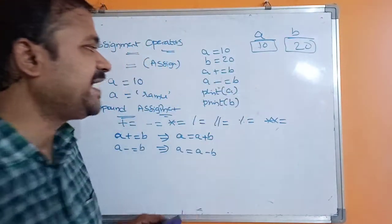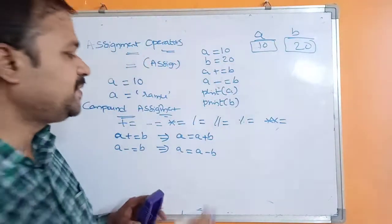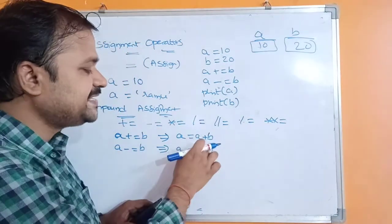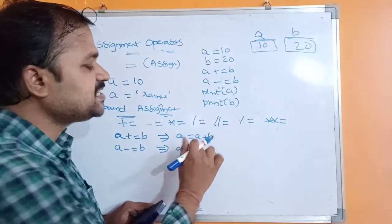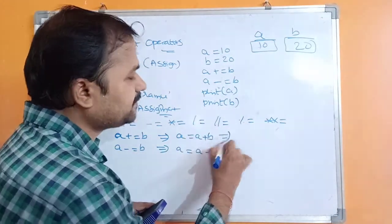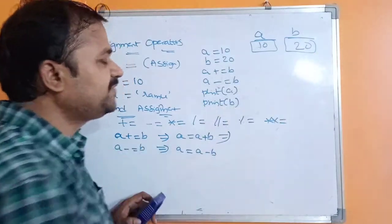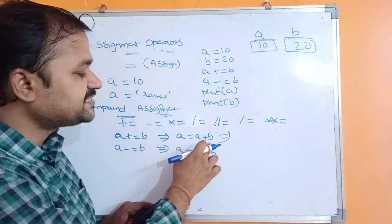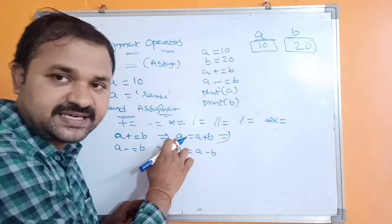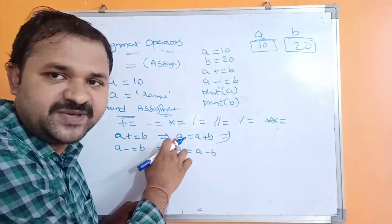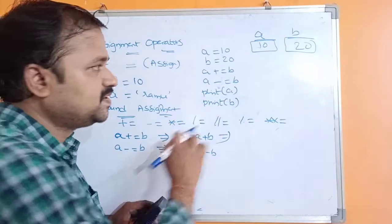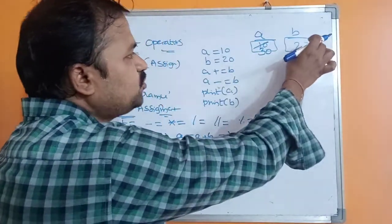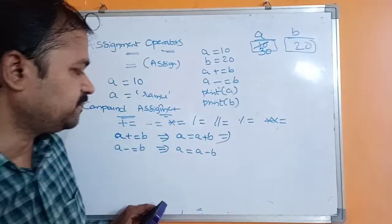Let's see the output. Initially, a is 10 and b is 20. The first statement is a += b, which is equivalent to a = a + b. So 10 + 20 = 30, and that 30 will be stored in a. Now a becomes 30, and there is no change in b.